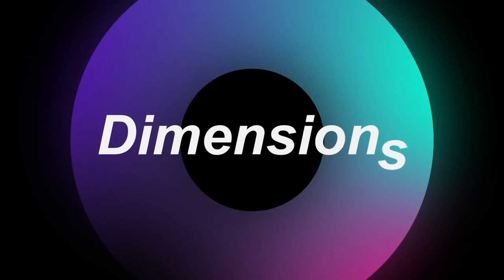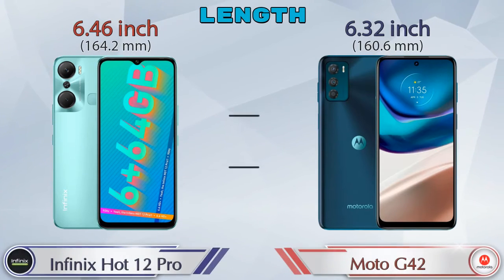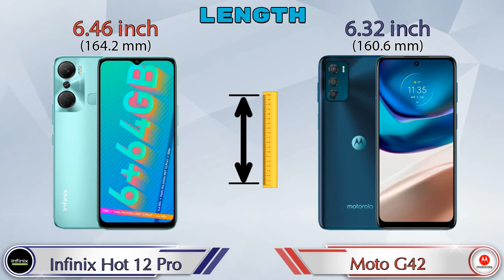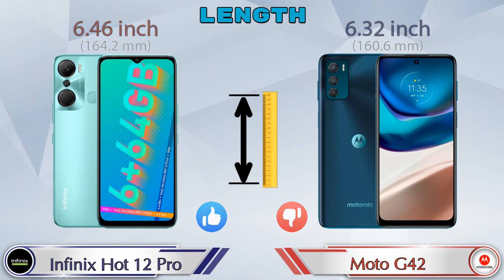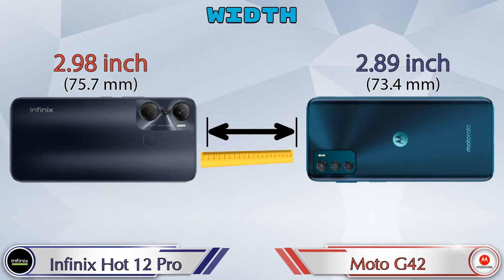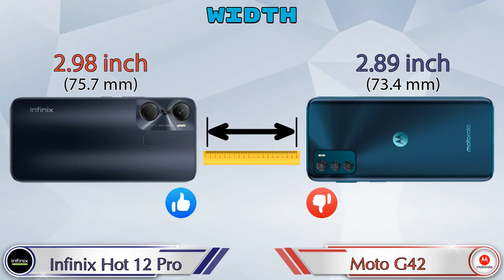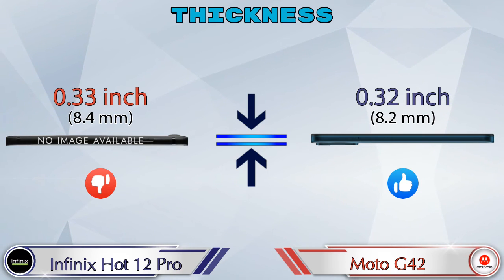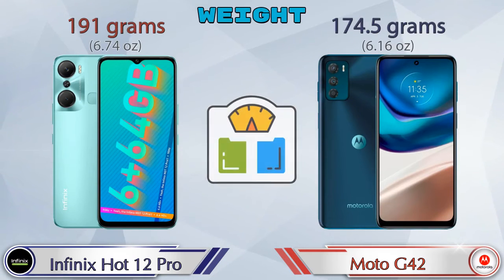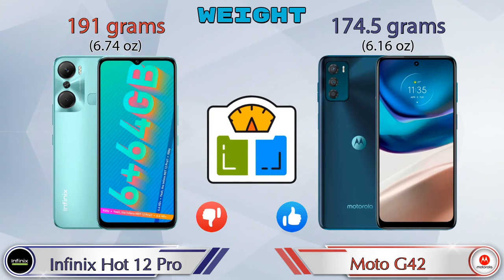Now let's check the dimensions. The length of the Hot 12 Pro is 6.46 inches and the G42 is 6.32 inches, which is less than the Hot 12 Pro. Width on the Hot 12 Pro is 2.98 inches and the G42 is 2.89 inches. Thickness on the Hot 12 Pro is 0.33 inches and on the G42 it is 0.32 inches. Weight: the Hot 12 Pro is 191 grams and the G42 is 174.5 grams.